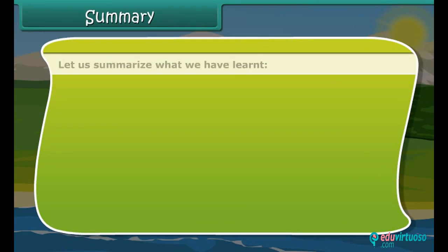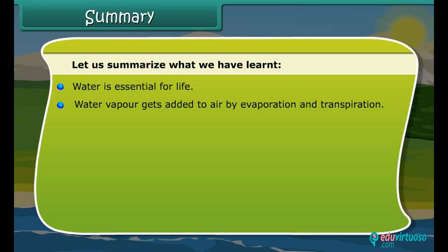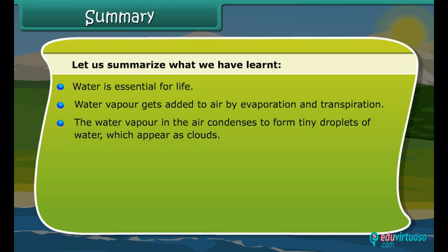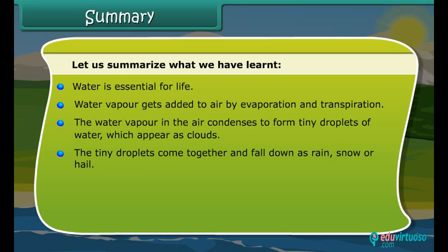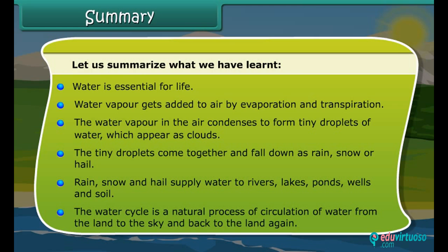Summary: Water is essential for life. Water vapor gets added to air by evaporation and transpiration. The water vapor in the air condenses to form tiny droplets of water which appear as clouds. The tiny droplets come together and fall down as rain, snow or hail, supplying water to rivers, lakes, ponds, wells and soil. The water cycle is a natural process of circulation of water from the land to the sky and back to the land again.